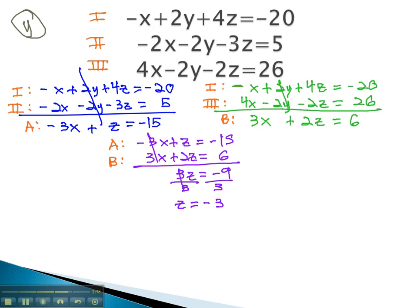Going back to either a or b, we can find out what the other variable is. Let's go to equation a. Negative 3x plus z, which is negative 3, equals negative 15. Adding 3 gives us negative 3x equals negative 12, and divided by negative 3, we find out x is equal to 4.